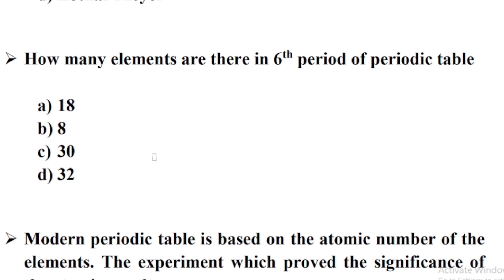How many elements are there in the 6th period of the periodic table? Option D: 32.